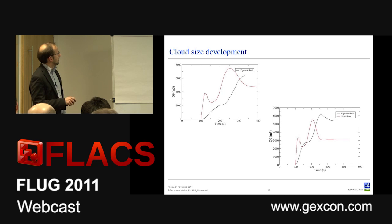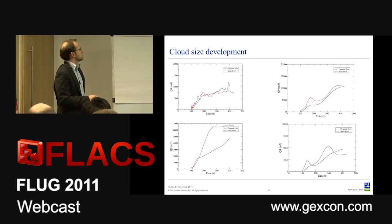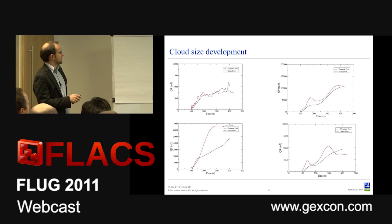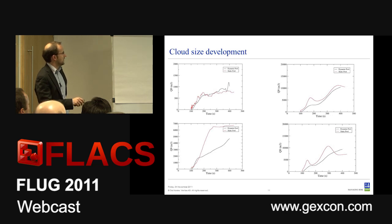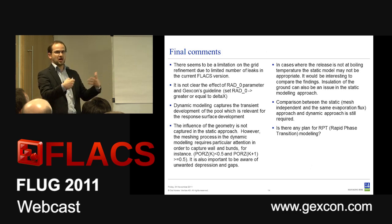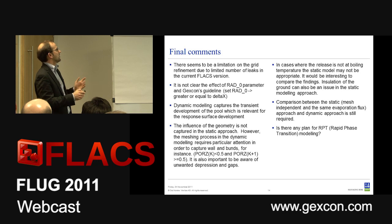Another parameter I want to discuss is the outer radius. The guideline is that it should be greater than or equal to three times delta x. My question for Gexon is: when I set a value for the outer radius, am I telling the pool it can't spread to a radius larger than that value? Or is there something else implicit in the model? I'll come back to this.